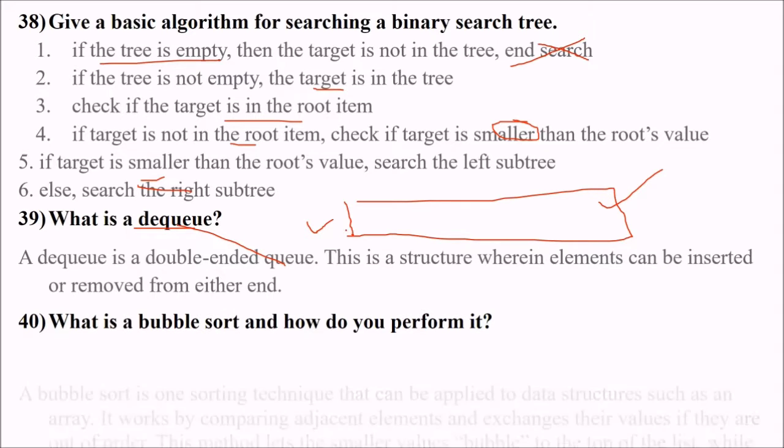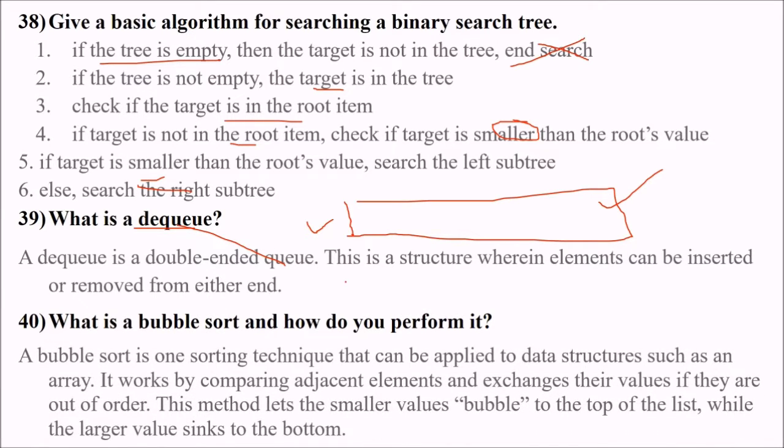What is bubble sort and how do you perform it? The way bubbles in the water find their path from the bottom to the top, bubble sort is a sorting technique which can easily be applied to data structures such as arrays. You just compare adjacent elements and try exchanging them if they are out of order. This method lets the smallest value bubble to the top of the list while the larger values sink to the bottom.